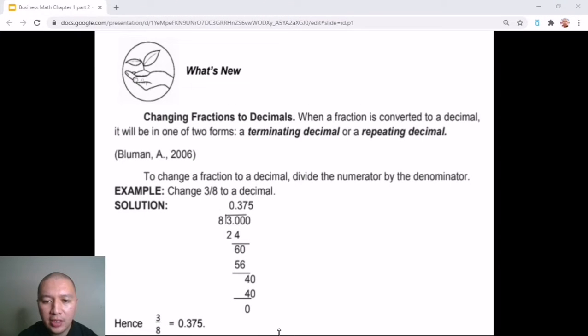For this example, our answer is a terminating decimal because there is a definitive answer of 0.375. And if we would do it manually, there will be a certain point wherein you can no longer divide the given.